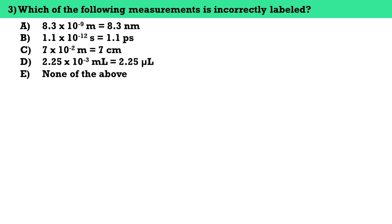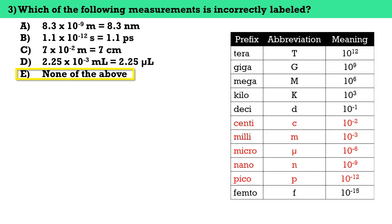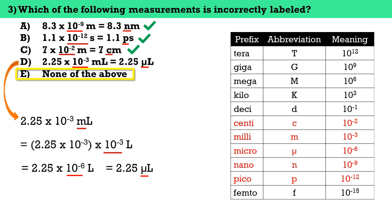Number three, which of the following measurements is incorrectly labeled? The answer here is letter E, none of the above. Here's a table of the prefixes used with SI units. It is very obvious that letters A, B, and C are all correctly labeled. Letter D is a little tricky: 2.25 times 10 to the negative 3 milliliters is equal to 2.25 microliters. If we substitute 10 to the negative 3 for the prefix milli, 2.25 times 10 to the negative 3 milliliters becomes 2.25 times 10 to the negative 6 liters, and 10 to the negative 6 corresponds to the prefix micro. So 2.25 times 10 to the negative 6 liters equals 2.25 microliters, meaning letter D is also correctly labeled. That's why the answer is letter E.